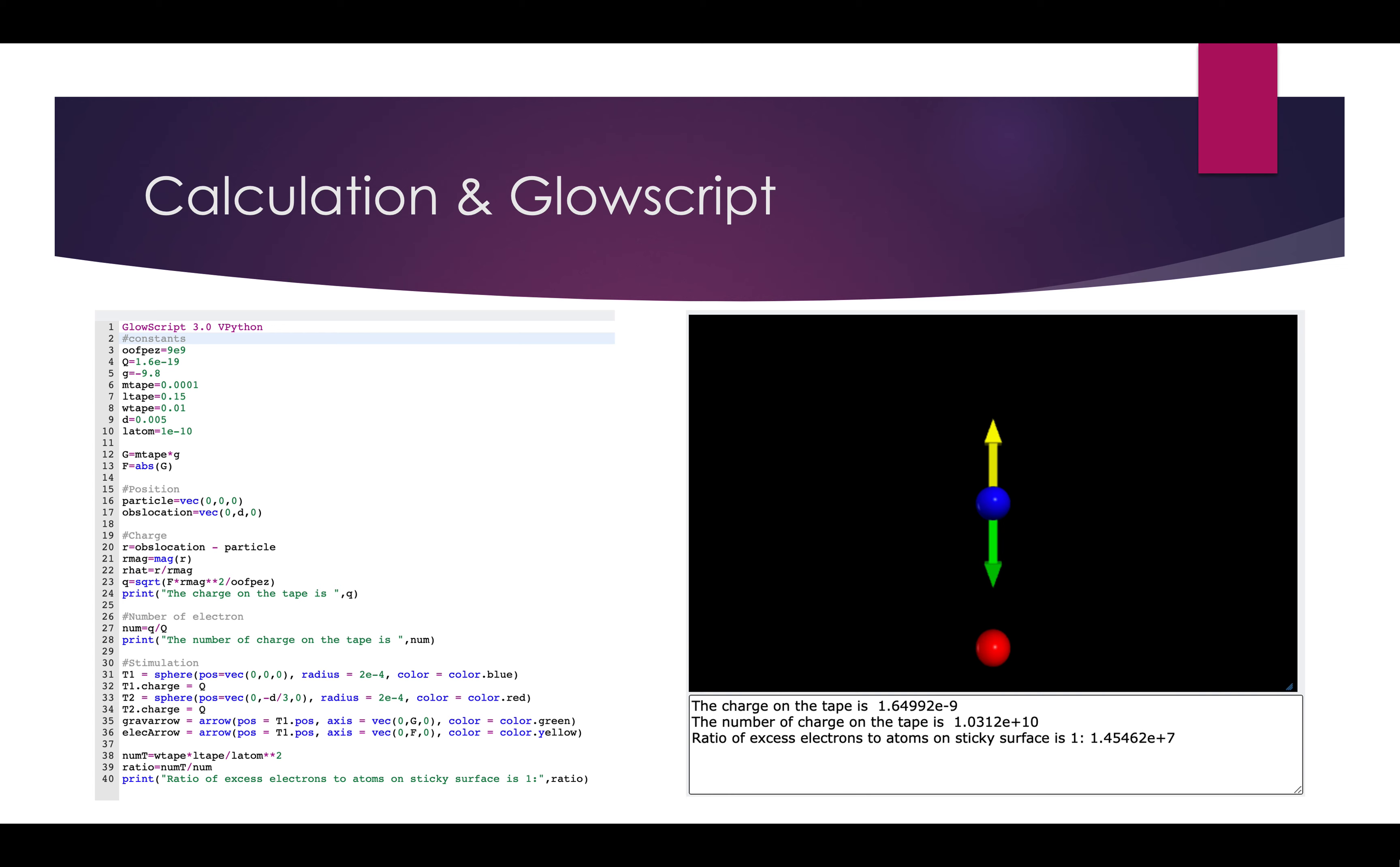The distance here is the distance I believe there is some repulsion between the tapes when they are very close to each other in my case. So, it's about 0.005 meter, which is about 0.05 centimeters. And the length of the atom we use here is 1 times 10 to the negative 10 meters. First, we have the gravity calculated as M_tape times the gravity constant, and then the F is equal to the absolute value of gravity, so it can balance the force to have the upper tape stay.